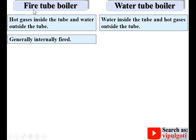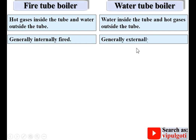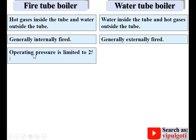Generally, fire tube boilers are internally fired, whereas water tube boilers are generally externally fired. Internally fired means the furnace is inside the boiler shell. Externally fired means the furnace is outside the boiler shell.